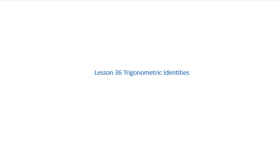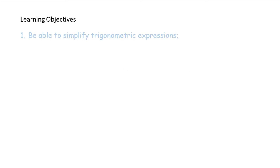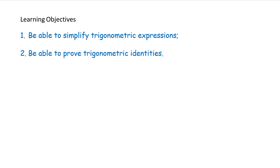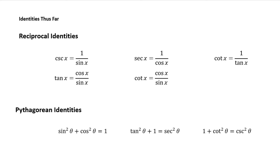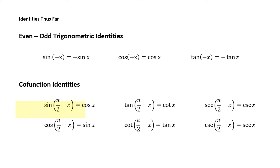The objectives of this lesson are: one, be able to simplify trigonometric expressions, and two, be able to prove trigonometric identities. Provided for you is a list of the basic trig identities we have learned thus far and memorized. They are the reciprocal identities, the Pythagorean identities, the even-odd trigonometric identities, and the cofunction identities.